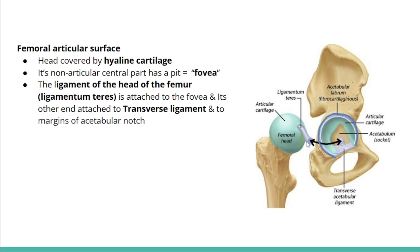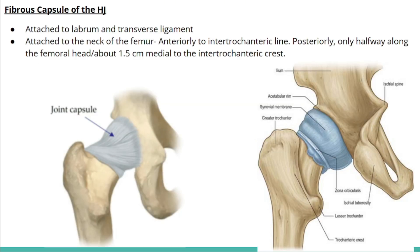This ligament of the head of the femur also attaches to the transverse ligament of the acetabulum and to the margins of the acetabular notch. The fibrous capsule has different attachments anteriorly and posteriorly. The capsule is attached to the acetabular labrum and the transverse ligament.